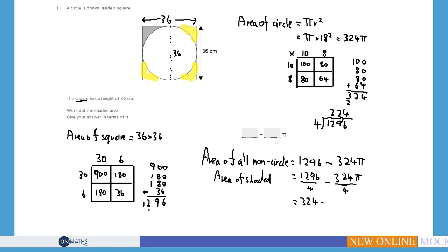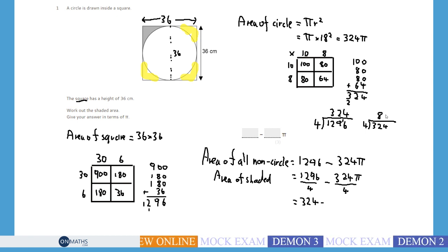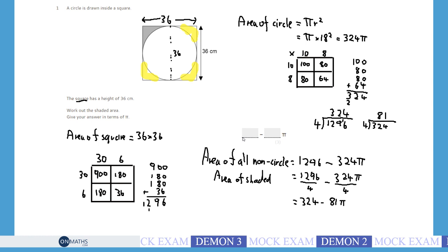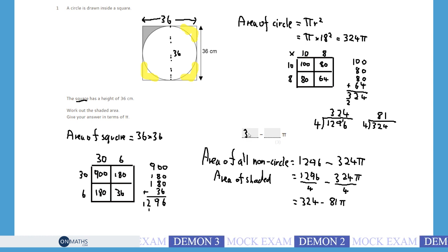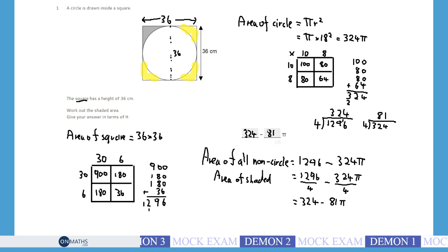Take away. And again, I'll do some long division, the bus stop method. And I don't need to worry about the pi. If I divide this number by 4 and just put pi at the end of it, that's absolutely fine. So 4s into 3 don't go. 4s into 32 go 8. And 4s into 4 go 1. So that's 81 pi. Therefore my answer is 324 take away 81 pi.